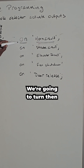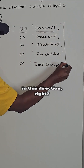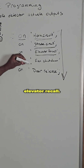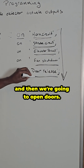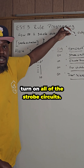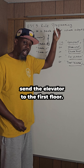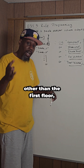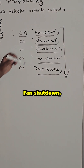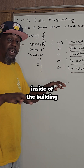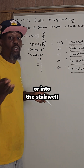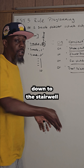So we're going to activate the horns, activate the strobes, activate elevator recall, shut the fans down, and open the doors. Elevator recall will send elevators to the first floor if the smoke is on another floor, or to an alternate floor if the smoke detector goes off in the elevator lobby on the first floor. Fan shutdown stops the circulation of smoke inside the building. Door release opens all the doors for free egress out of the building or into the stairwell.